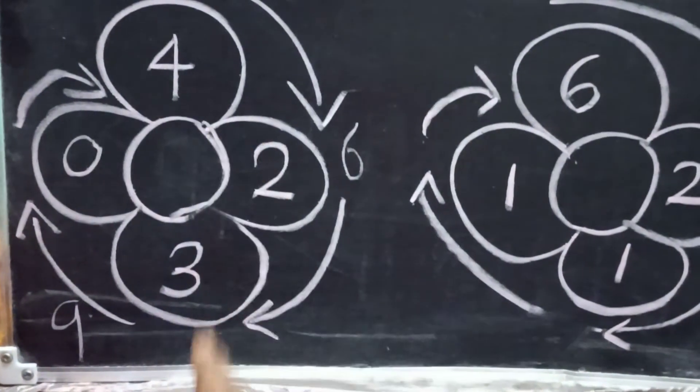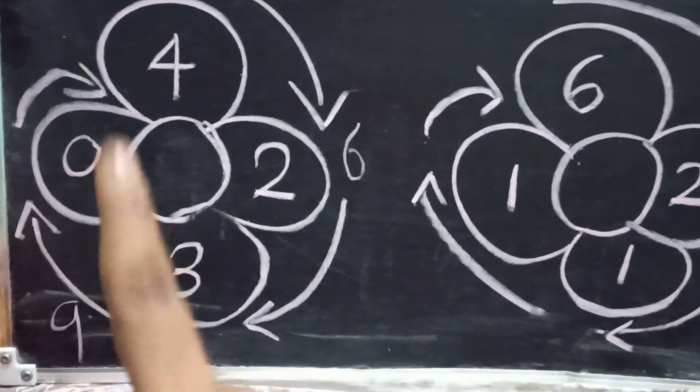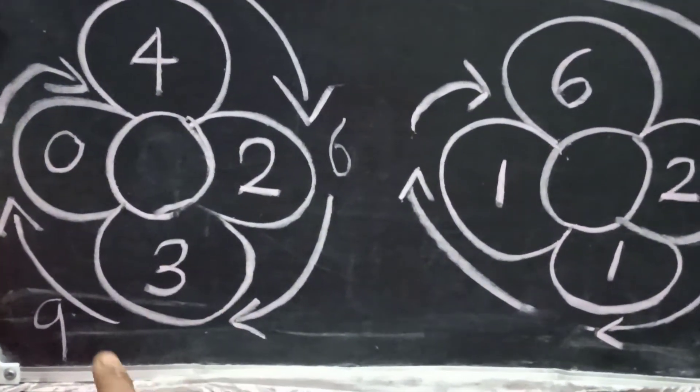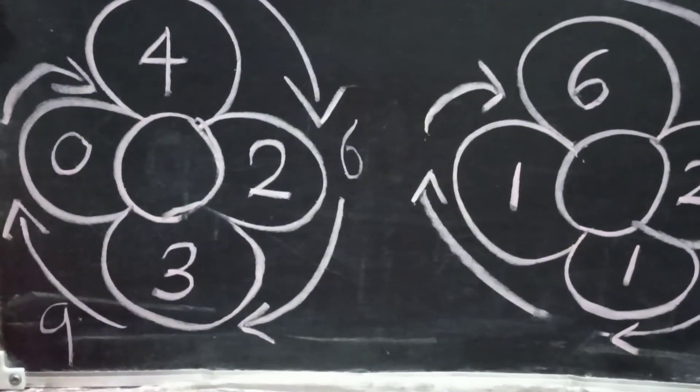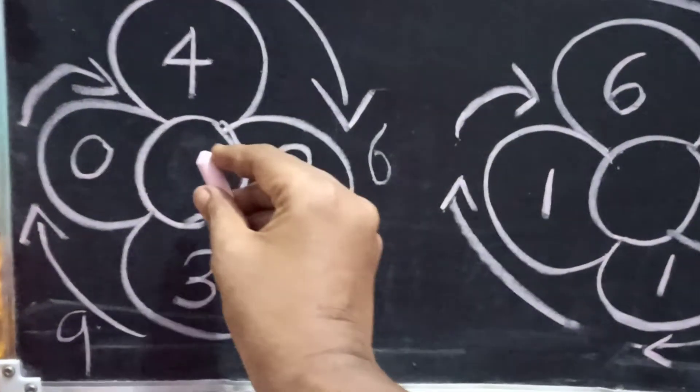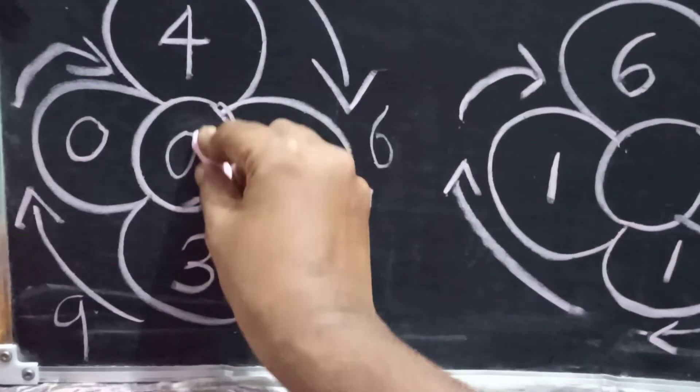So nine, when you add any number to zero, the same number will be the answer. So when you add any number to zero, the same number will be the answer. So answer is nine.